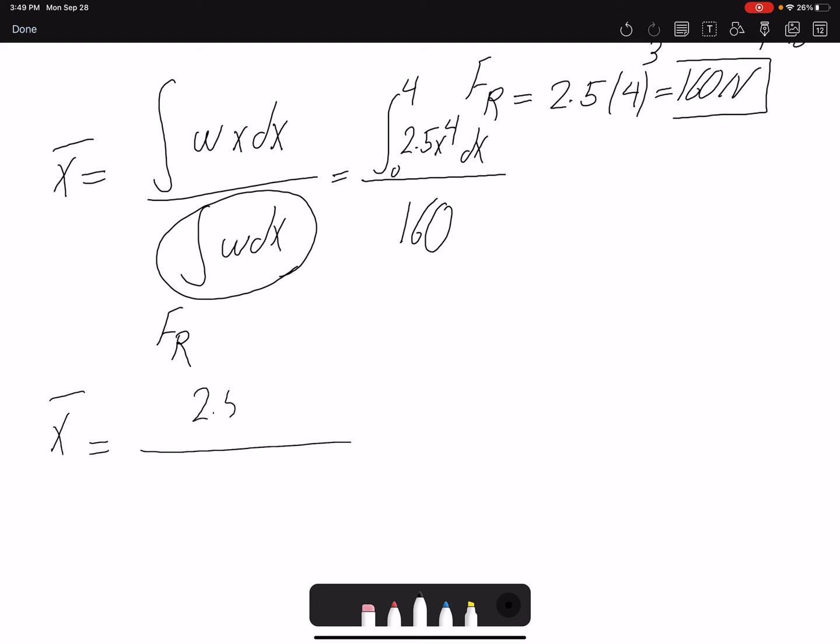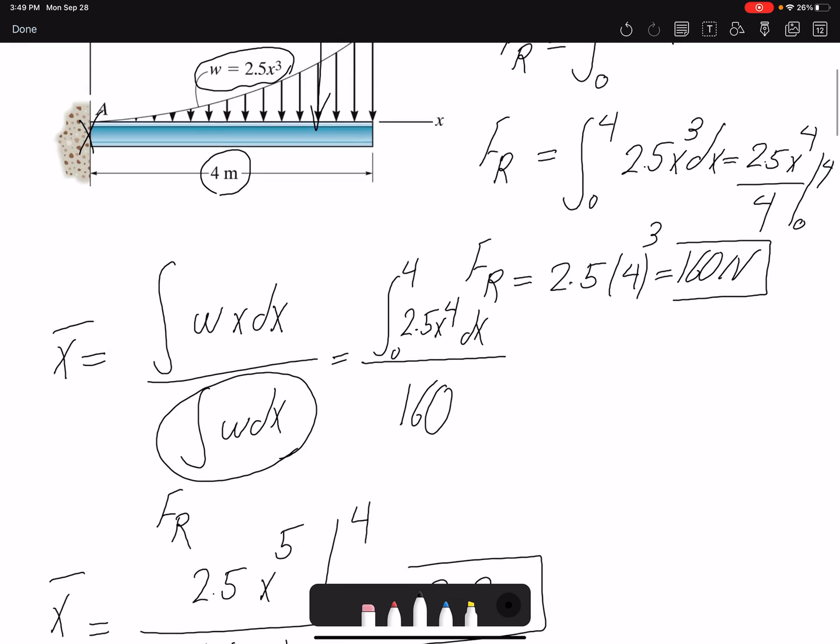2.5x to the fifth divided by 5, and then we have 160 in the denominator, this one from 0 to 4. X bar would be 3.2 meters.